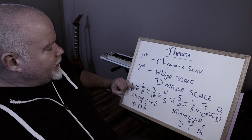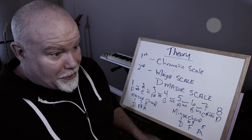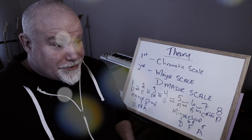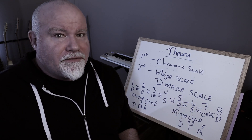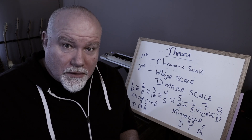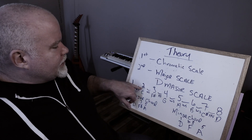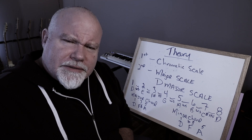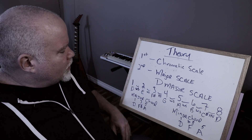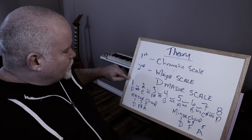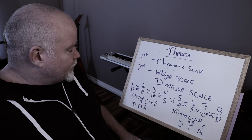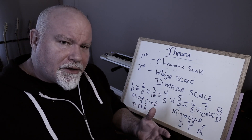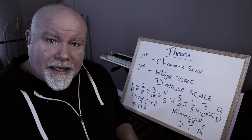Today we're going to talk about the difference between a major chord and a minor chord. We'll use the D major scale. We have something called the degrees of the major scale. To make a major chord, we take the first degree — D — the third degree — F sharp — and the fifth degree — A. We put them together and we have what's called a major chord. When you play D, F sharp, and A together on the guitar neck or keyboard, you have a D major chord.